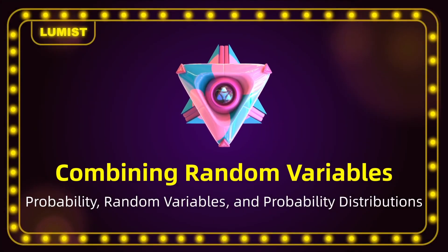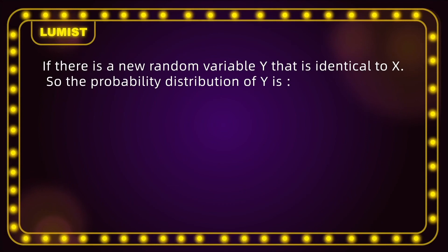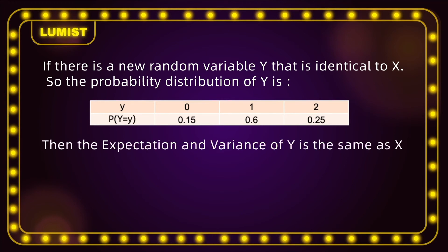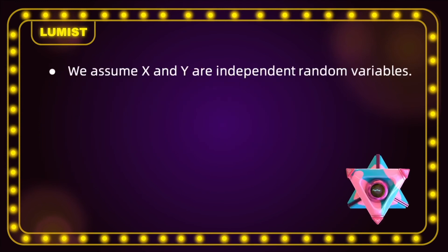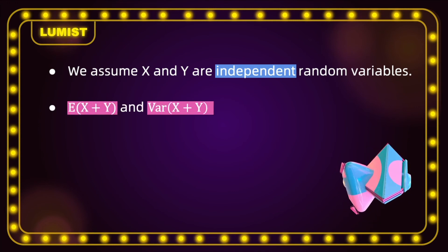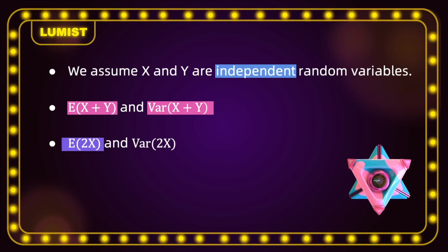Today we're going to talk about expectation and variance of more than one independent random variable — more specifically, their properties. Say there is a new random variable y that is identical to x, meaning the probability distribution of y is the same as x. Then the expectation and variance of y are the same as x. We will assume x and y are independent random variables. In this video, we will talk about the expectation of x plus y and variance of x plus y, and compare these with the expectation of 2x and variance of 2x.